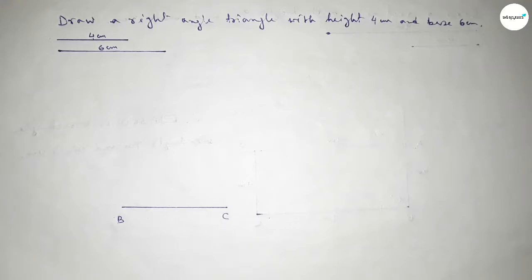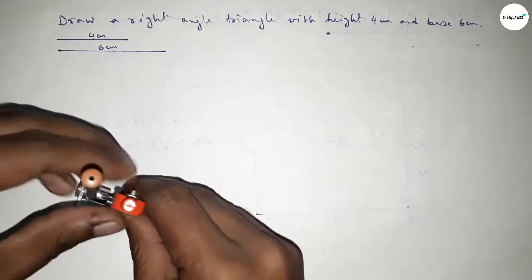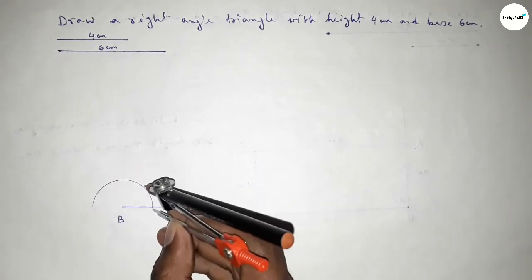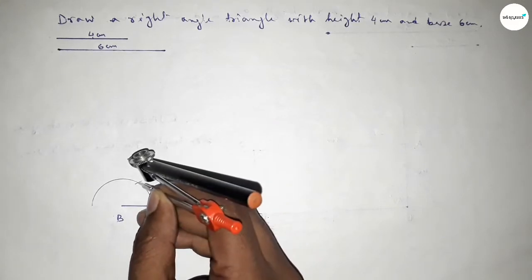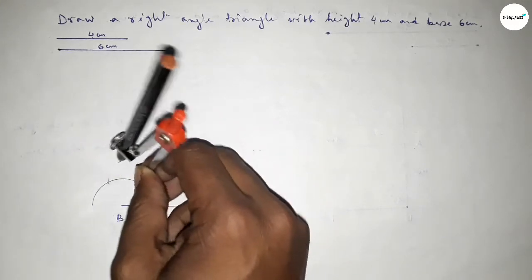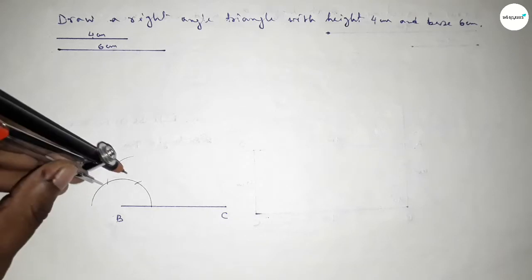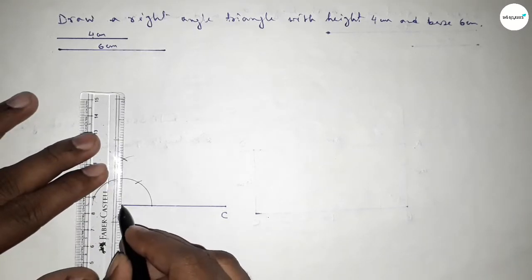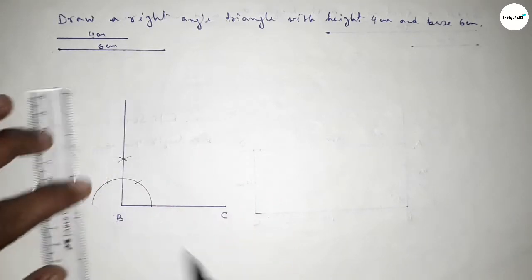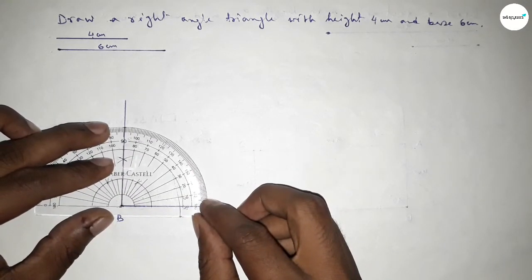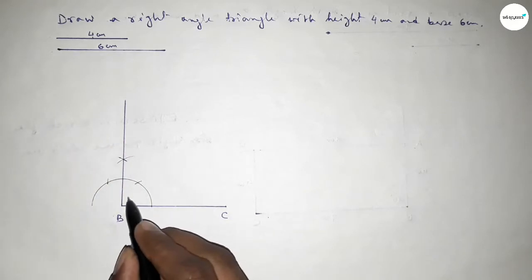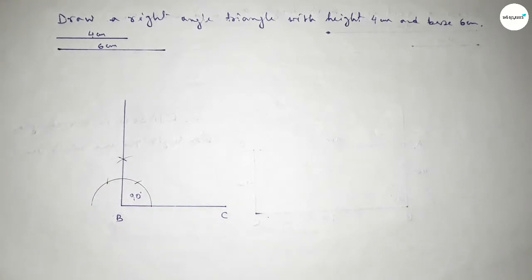Now we have to draw a 90 degree angle at point B. Putting the compass on point B, taking any length and drawing an arc. With the same length, placing the compass at the arc intersections and cutting arcs, then drawing another arc with the same length. Both curves intersect at a point. Joining this gives a 90 degree angle — checking, this is perfectly 90 degrees.